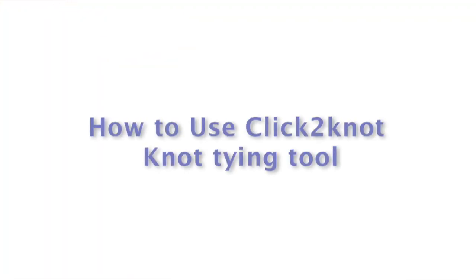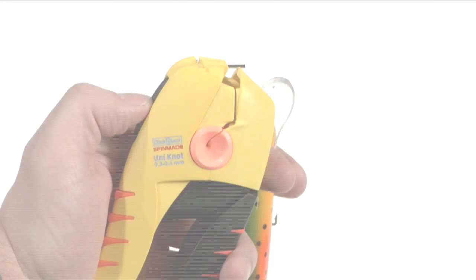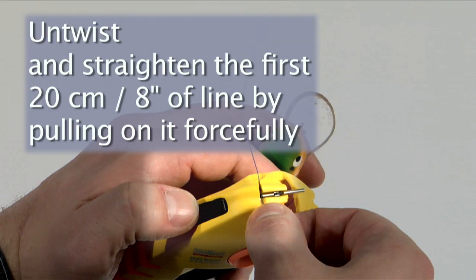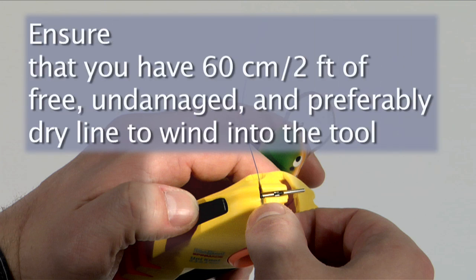Here's how you use Click to Knot, the new knot tying tool. First, untwist and straighten about 8 inches of line by pulling it forcibly. Make sure you have about 2 feet of free, undamaged, and preferably dry line to wind into the tool.